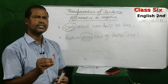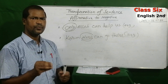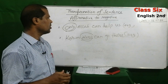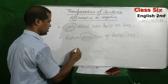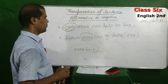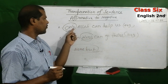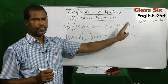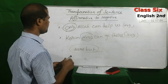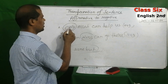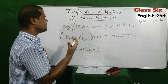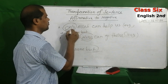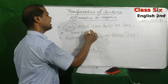To make a sentence with 'only' or 'alone' into negative form, you have to replace 'only' or 'alone' with 'none but.' So for 'Only Allah can help us,' you write 'None but Allah can help us.'